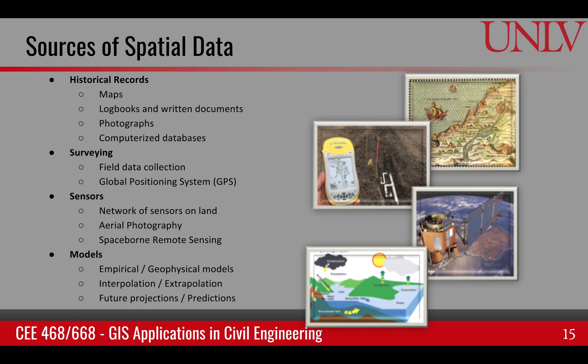Models could be interpolation, extrapolation, or projections to predict the future — such as global climate models. All of these are producing information about space, and it becomes part of our GIS database.